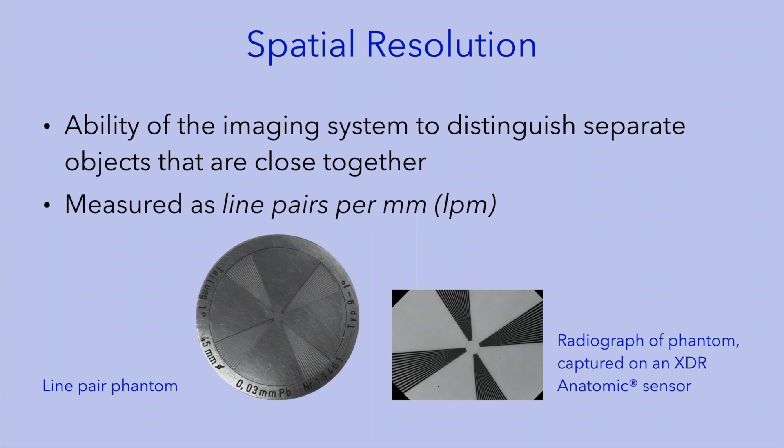We can use test objects to measure spatial resolution. These objects consist of thin alternating strips of lead and plastic, producing a radiographic image of alternating radiolucent and radiopaque lines. In this particular test object, the lead strips are aligned in a radial fashion. The point at which we cannot identify the individual lead strips defines the limit of the spatial resolution of our system.